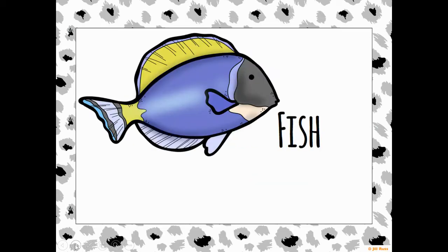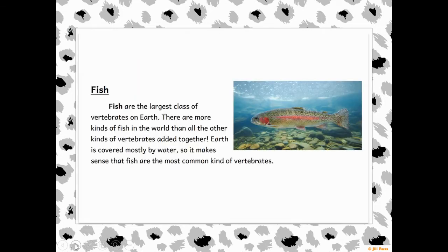Let's dive in deeper to our first group — the fish. Turn to the section on fish on page 60, or on the back of page two. Fish are the largest class of vertebrates on earth. Do you remember the largest class of invertebrates? Insects — insects are the largest class of invertebrates. There are more kinds of fish in the world than all the other kinds of vertebrates added together.